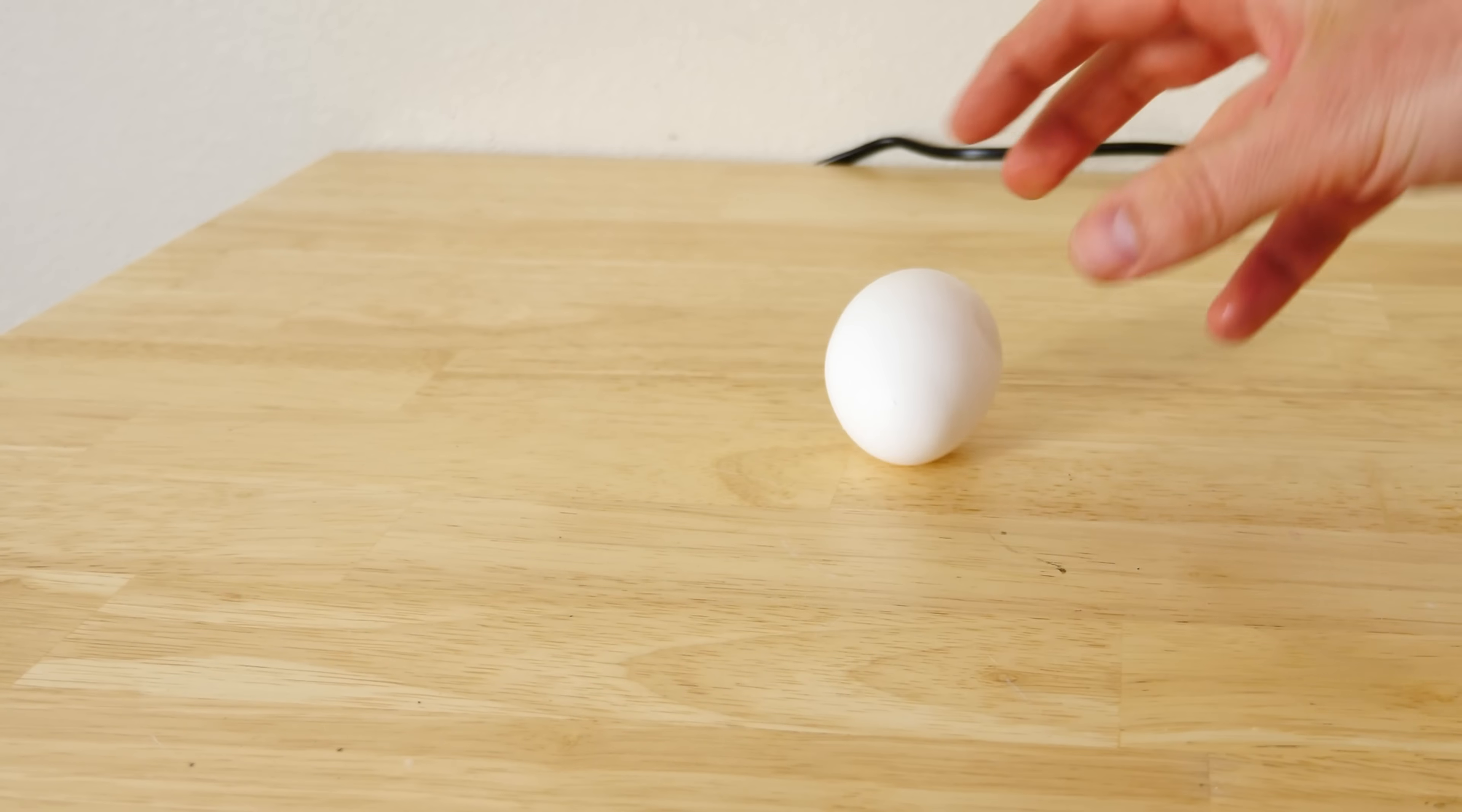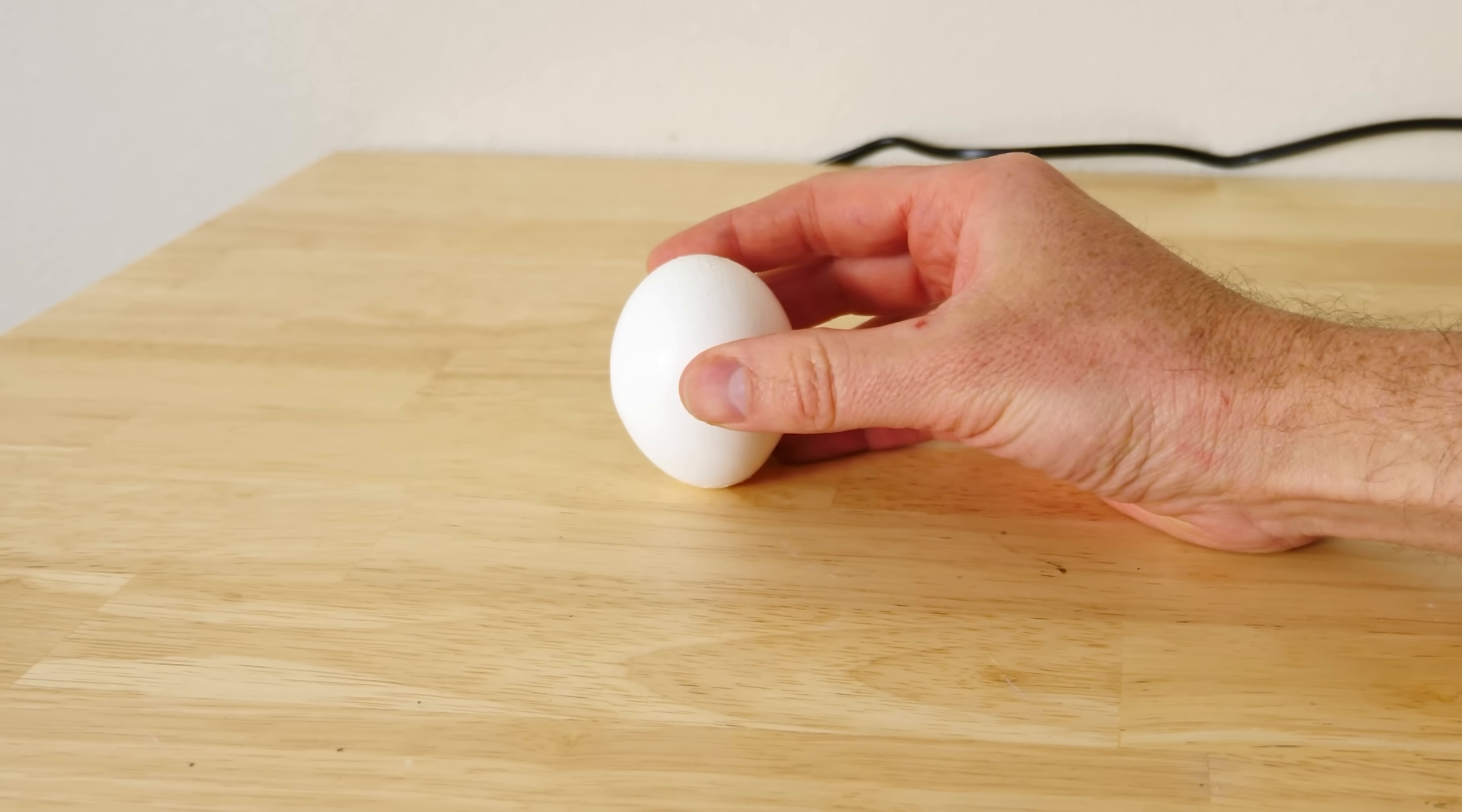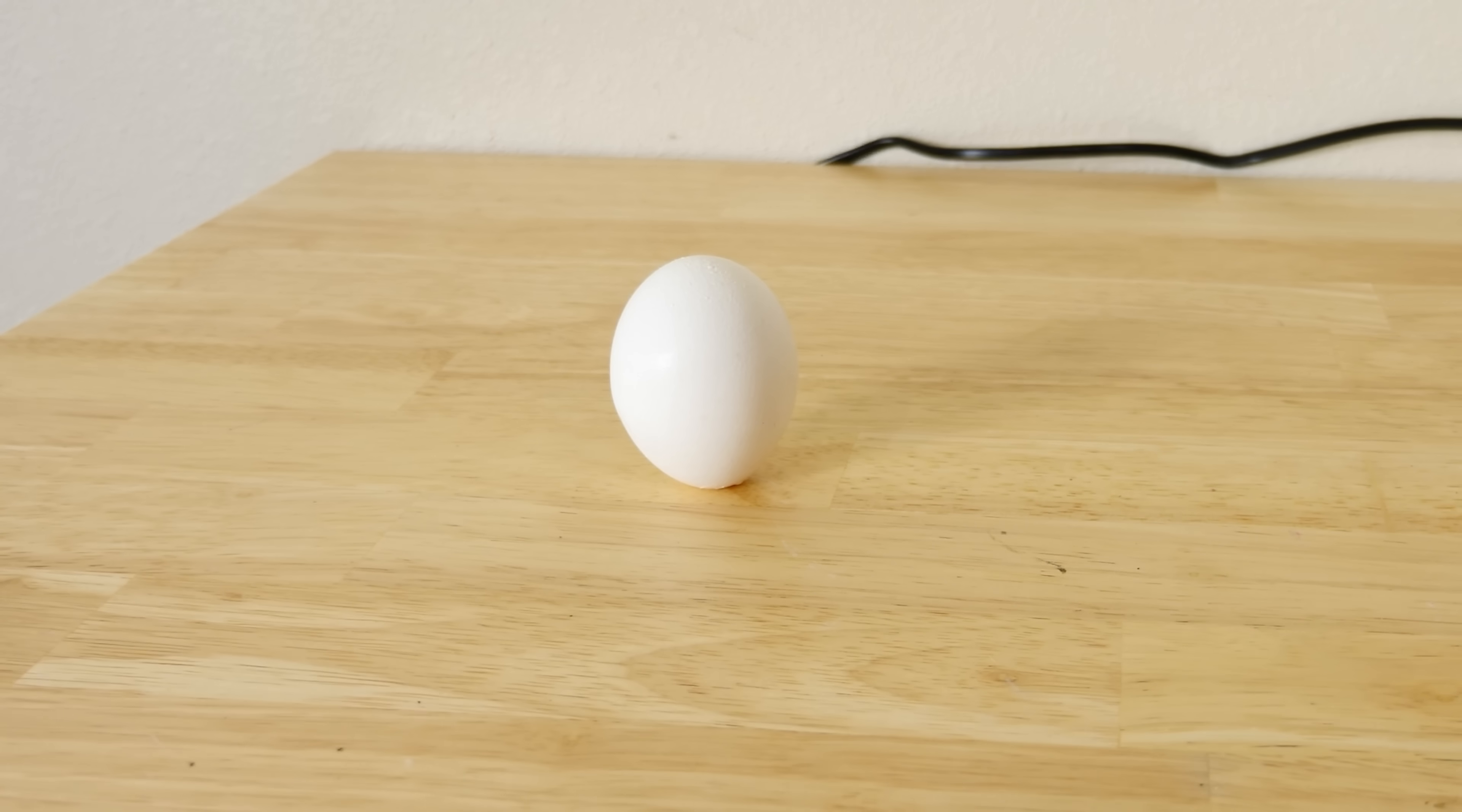When you try to balance an egg on its end, it always falls over. But then Christopher Columbus tapped it on its end and it broke the shell a little bit and it got it to balance straight up.